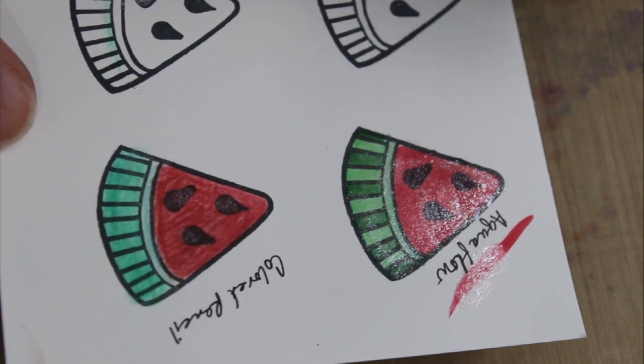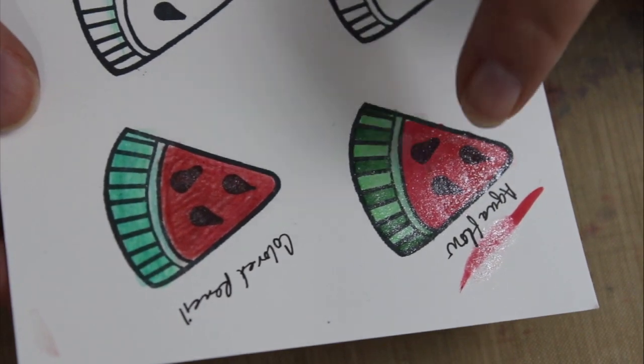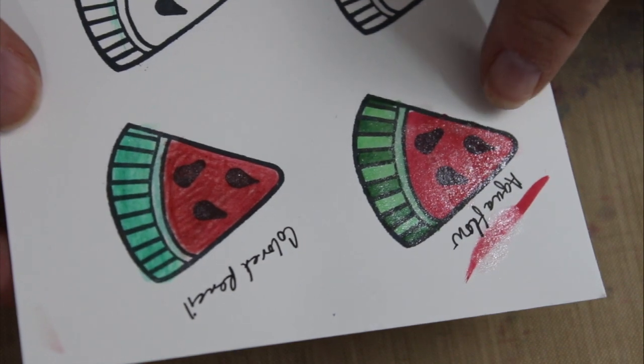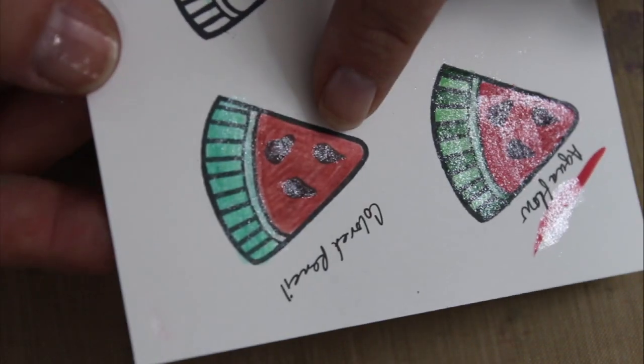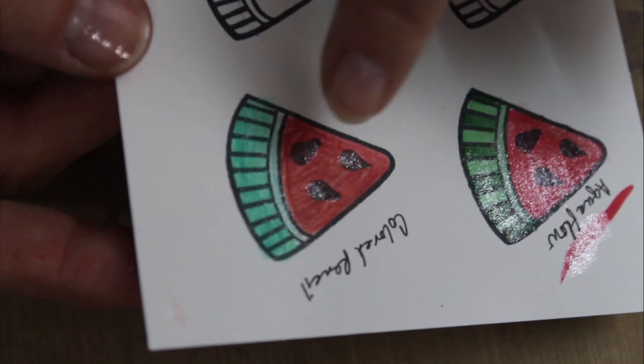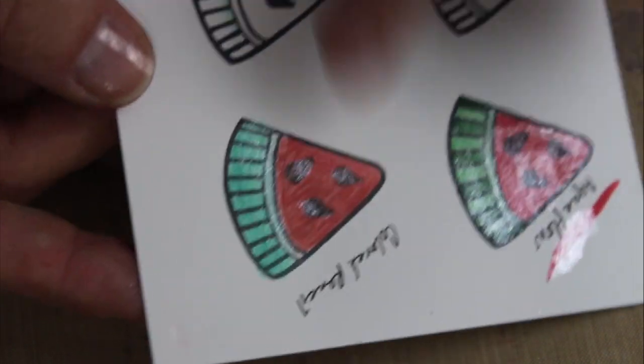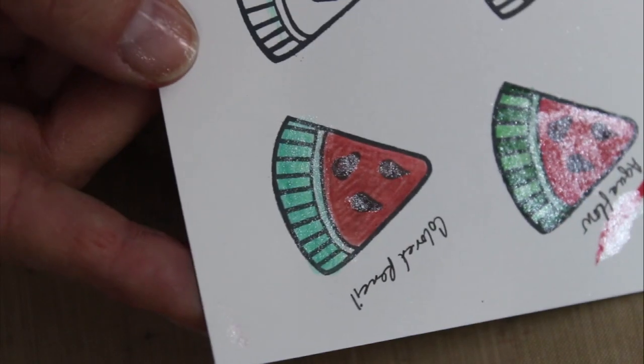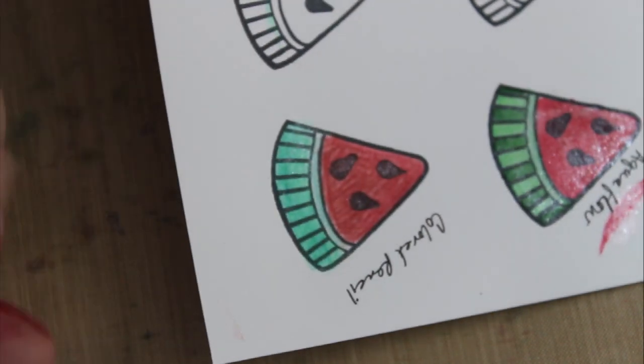I just wanted to show you that you can use the glitter gloss pen both on top of something like Aqua Flow but also on top of colored pencil. It won't work as a blender on colored pencil, but you can still use it on top of that medium to add shimmery highlights.